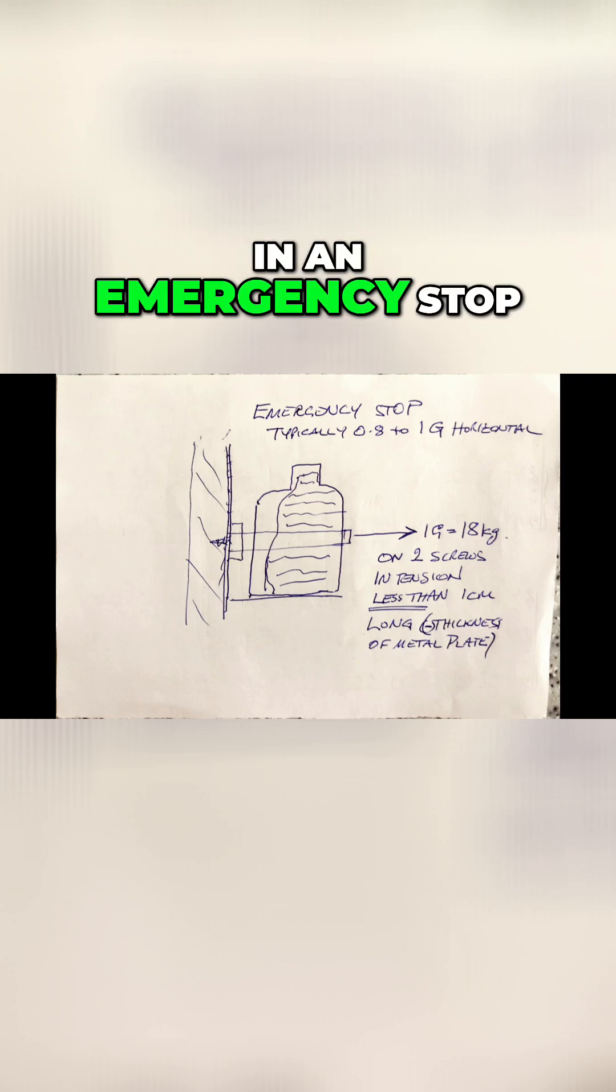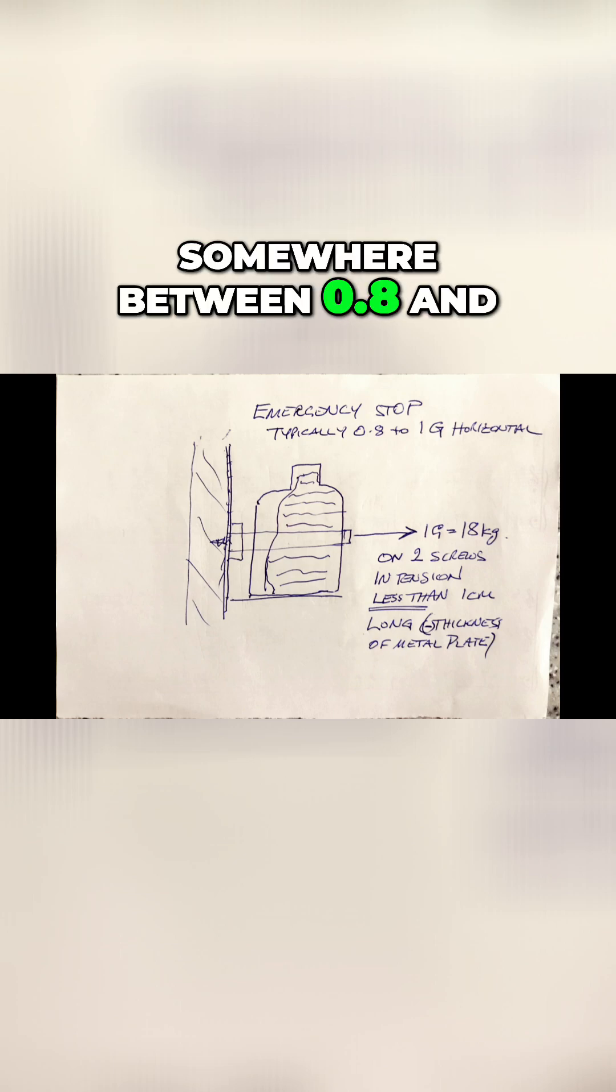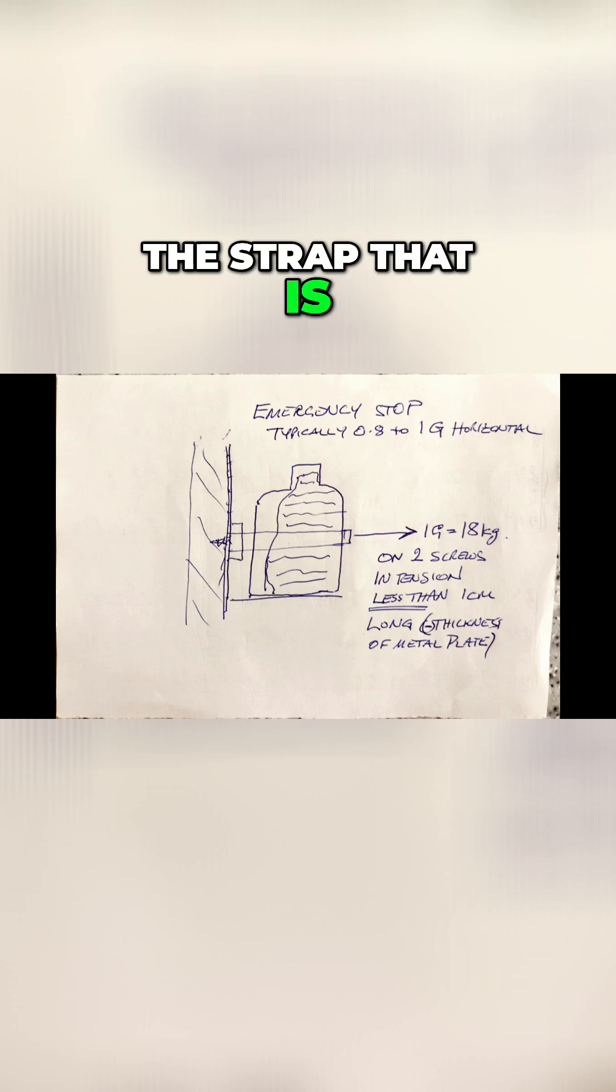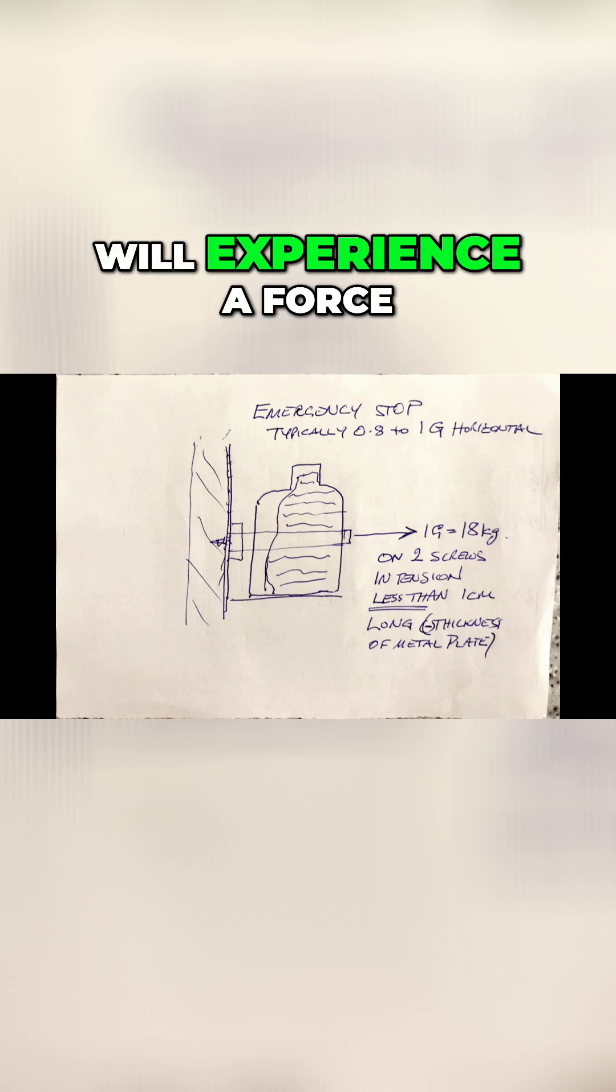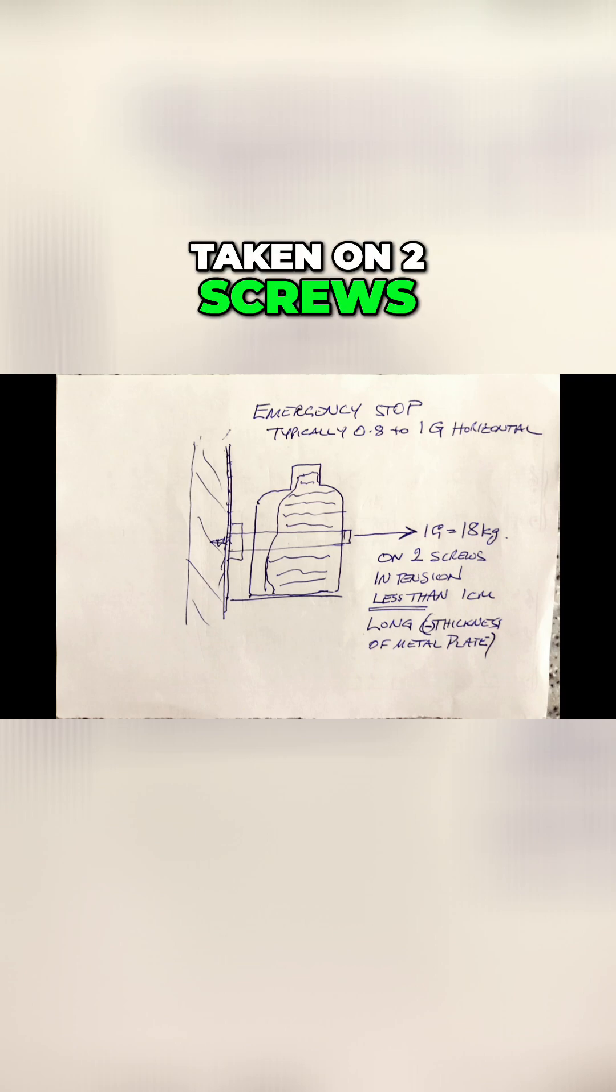In an emergency stop, the g-force horizontally is somewhere between 0.8 and 1 g-force, so the strap that is holding about the center of the bottle will experience a force of around 18 kilograms, and that has taken on two screws.